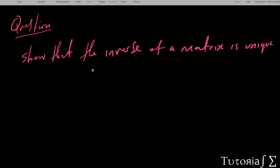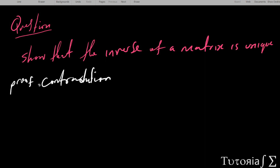The question states that the inverse of a matrix is unique, and what they're basically asking us is to show that the matrix has only one inverse. To show this, we're going to do a proof by contradiction.